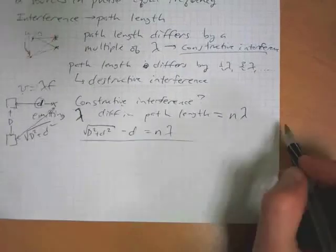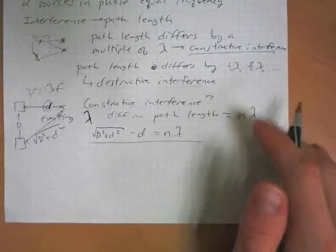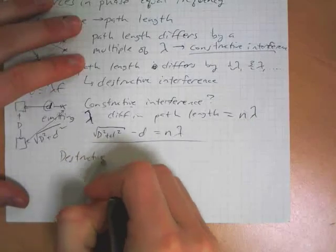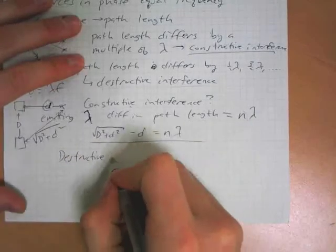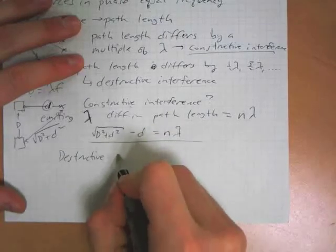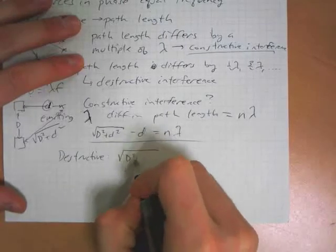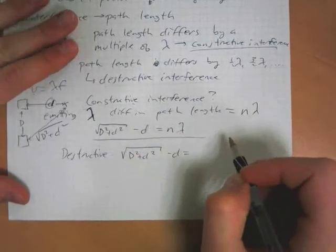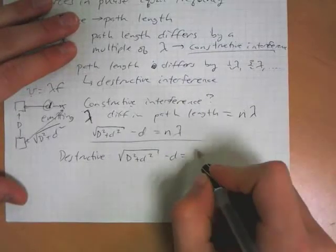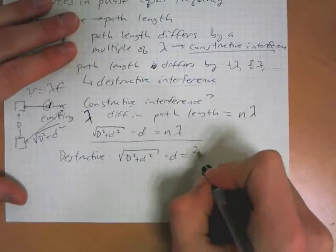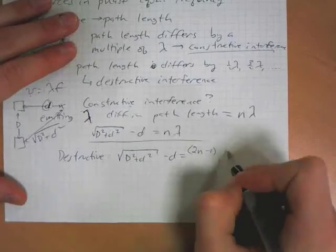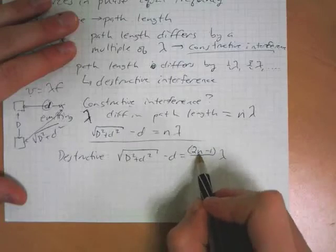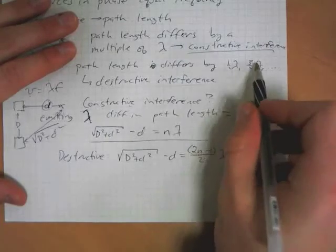So that is how you can figure out where constructive interference is. And for destructive, it's very similar. You can say the same thing, the difference in path length is equal to, well, it's an odd multiple of the wavelength. So we can call that two n minus one over two times lambda. So if n is one, this gives us half wavelength. If n is two, this gives us three halves of wavelength, et cetera.